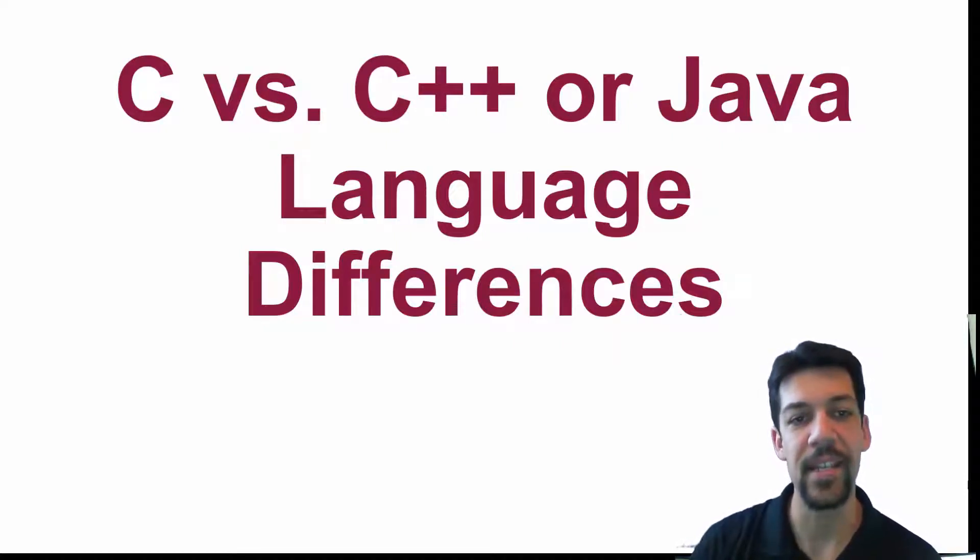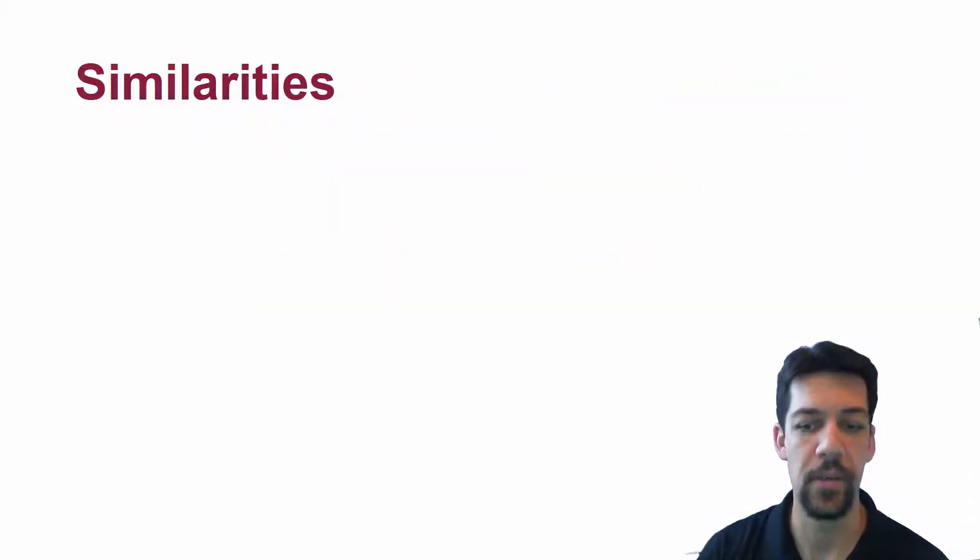Now let's look at some of the differences between C language and C++ or the Java language. Let's first look at some of the similarities.